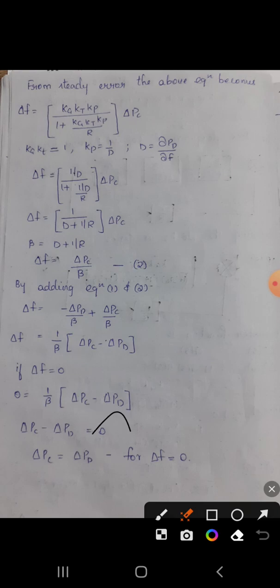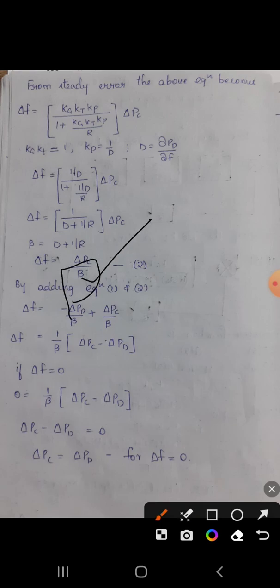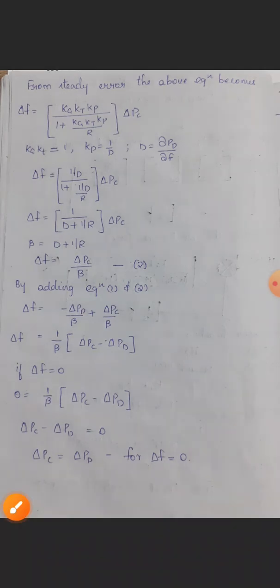For delta F equals zero, we have zero equals 1 by beta into delta PC minus delta PD, meaning delta PC equals delta PD and frequency remains constant with no change. Combining both equations: Case 1 is complete, and Case 2 follows the same approach. Both cases together complete the steady state analysis of the isolated block diagram.